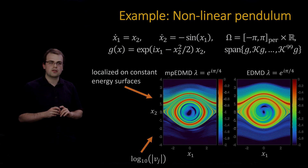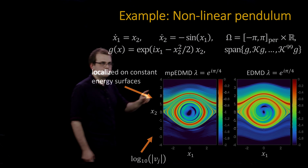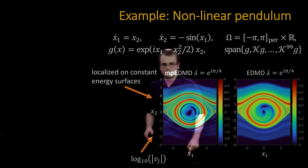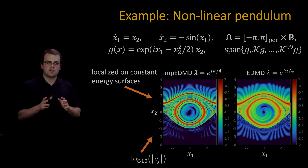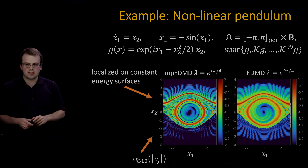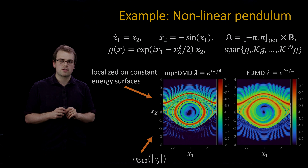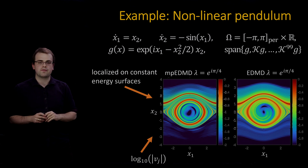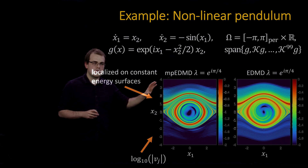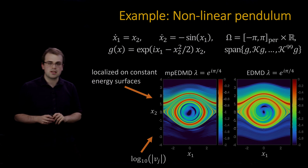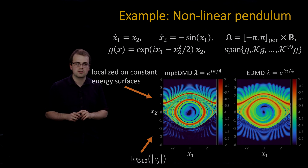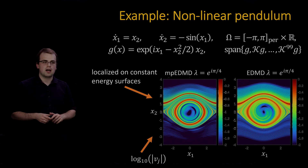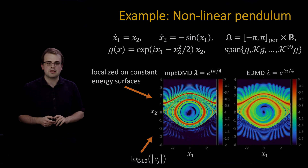Let's also look at the fully nonlinear pendulum. The state space is a periodic interval for the angle X1 and the real line for momentum. Using delay embedding of observable G, the generalized eigenfunctions of the Koopman operator should be Dirac masses localized along constant energy surfaces in phase space. Plotting eigenfunctions (log of absolute value) computed using MPE-DMD and EDMD, we see this localization. The MPE-DMD eigenfunction is much more localized than the EDMD one, indicating greater accuracy.